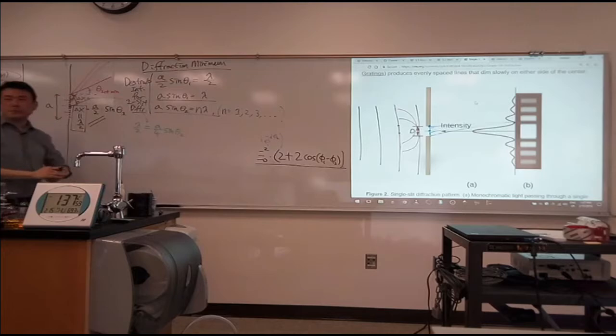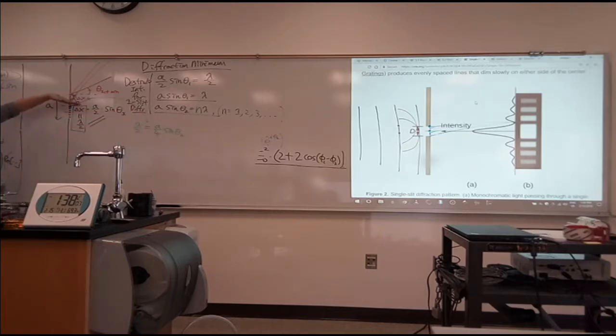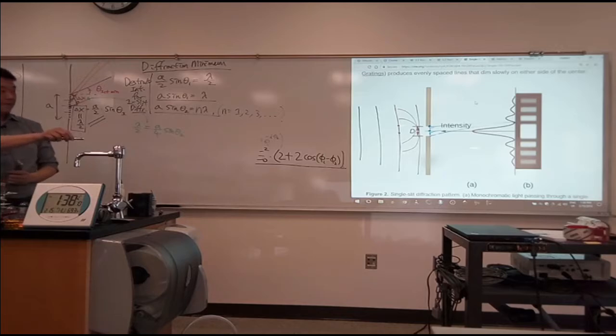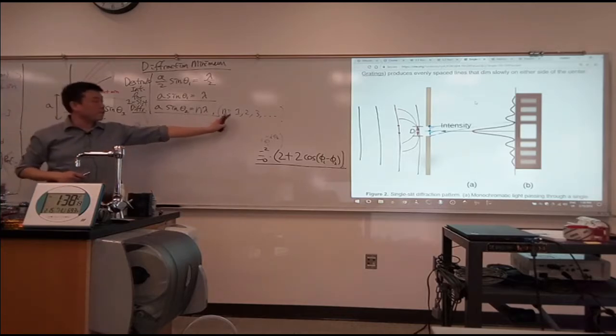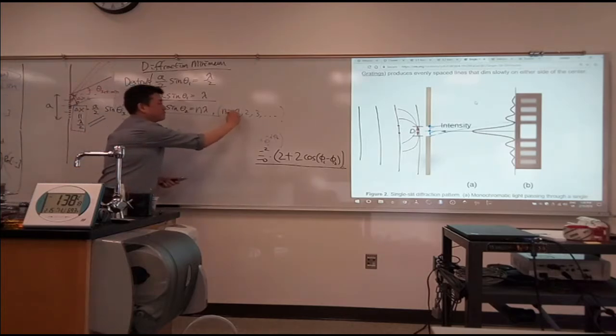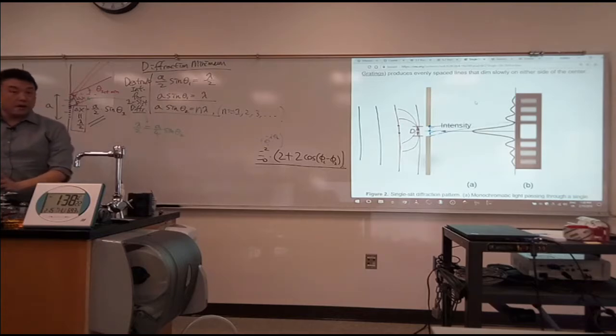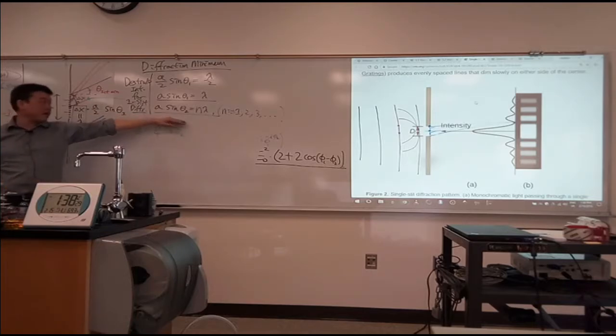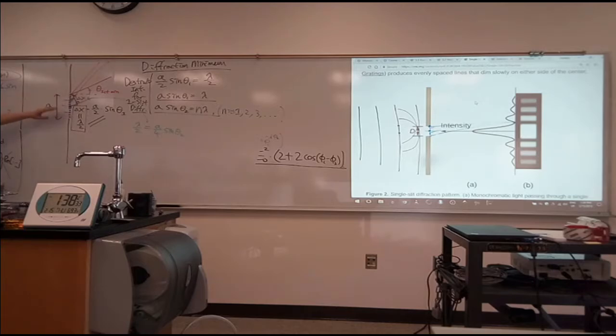So this is the condition for destructive interference for single-slit. As you can see, once you get that little nifty mathematical trick about considering the entire slit but breaking into halves and then pairing up the pairs that will destructively interfere, then the rest of the reasoning is exactly the same as double-slit interference. And for finding this minimum, it works out great.